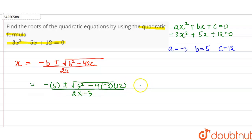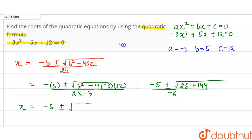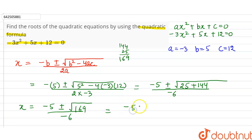So this is equal to minus 5 plus minus under root of 5 square which is 25, and minus into minus is plus, so plus 4 into 3 is 12 and 12 into 12 is 144, divided by 2 into minus 3 which is minus 6. The value of x will be equal to minus 5 plus minus under root of 144 plus 25, which is 169, divided by minus 6. And under root of 169 is 13.